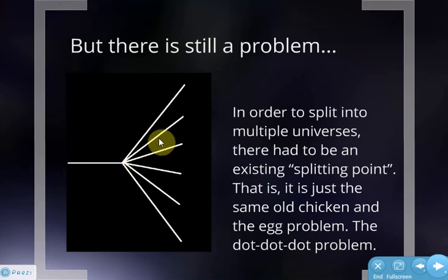But there's still a problem with that. In order to split into multiple universes, there had to have been a splitting point. They say this is our universe here. They can't really explain how we came about. It's really, if you think about it, just lights and mirrors trying to deflect the problem. We can't explain us, so let's just say there's an infinite number of universes. But it still is just begging the question. Where did the thing they all split from come from? It's still just this dot-dot-dot problem.